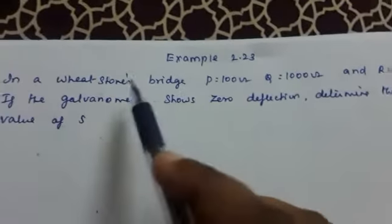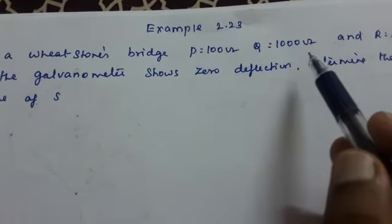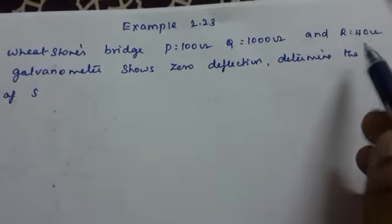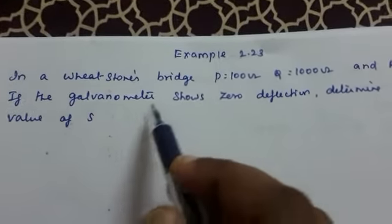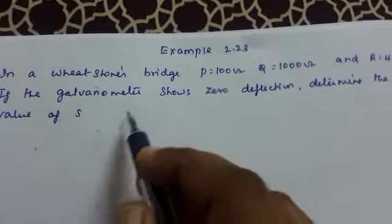Example 2.23: In a Wheatstone bridge, P equals 100 ohm, Q equals 1000 ohm, and R equals 40 ohm. If the galvanometer shows zero deflection, determine the value of S.